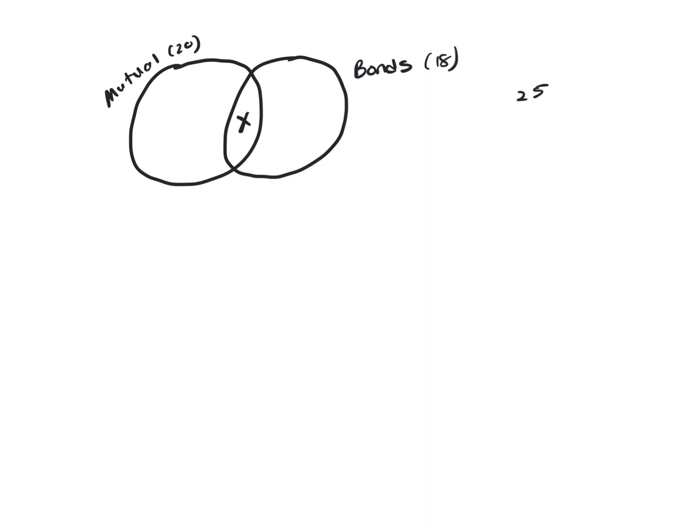So if you have X that invest in both and you have 20 that invest in mutual funds, the ones that invest just in mutual funds would be 20 minus X. That's going to be this piece here.